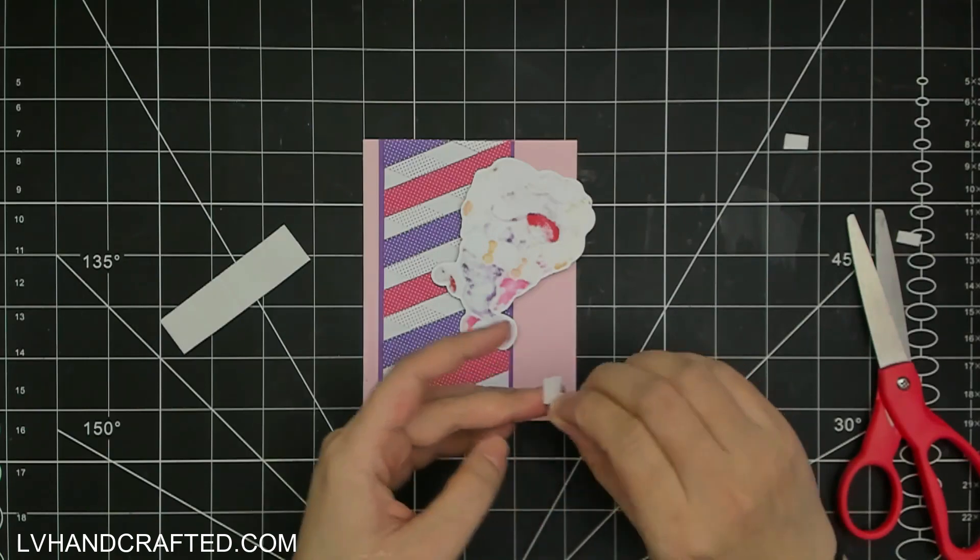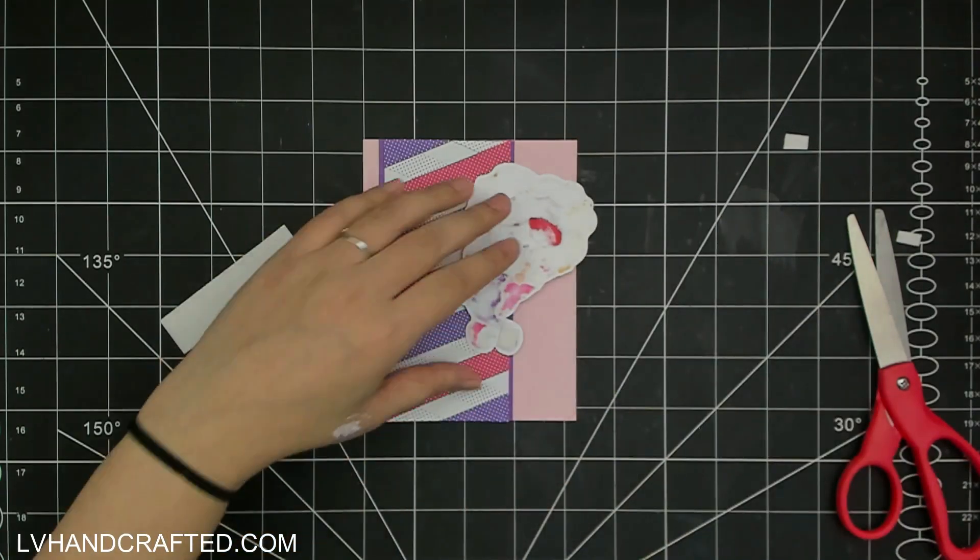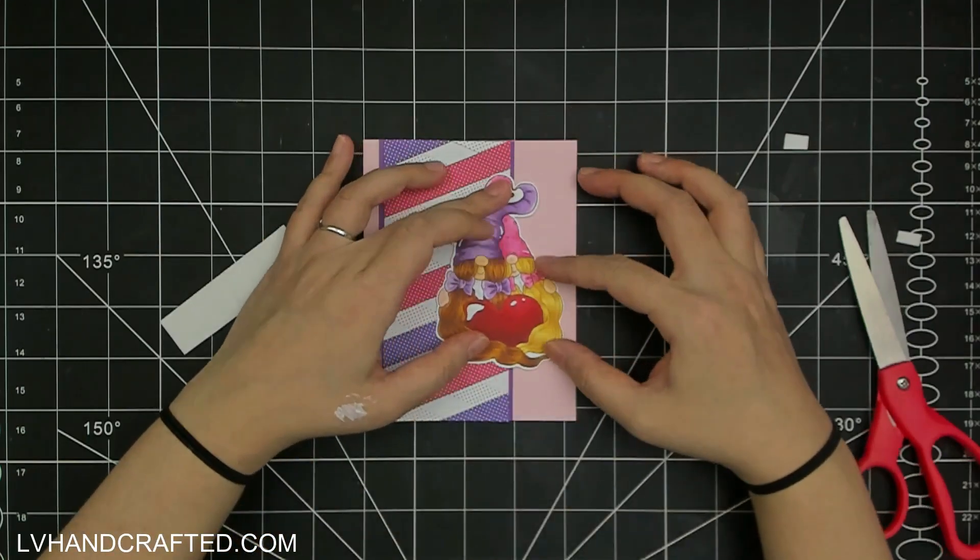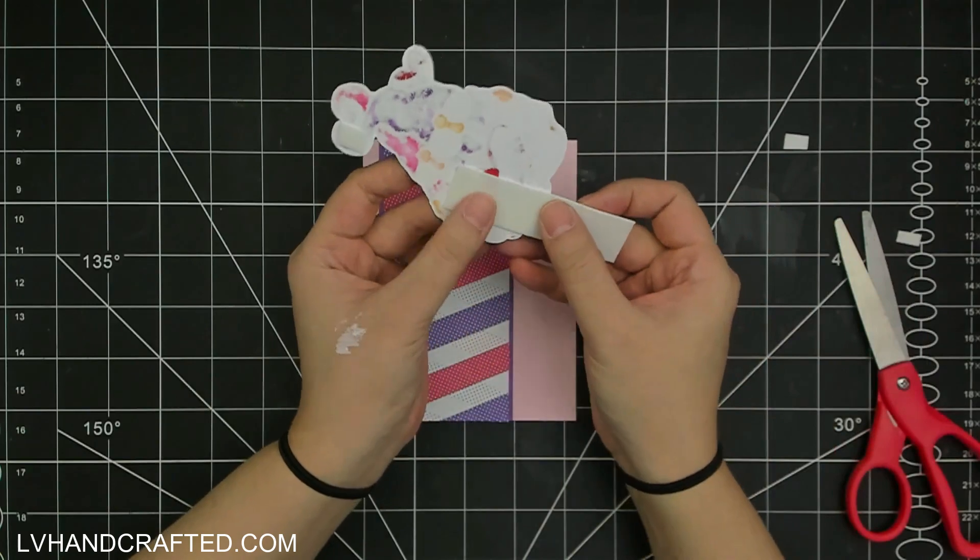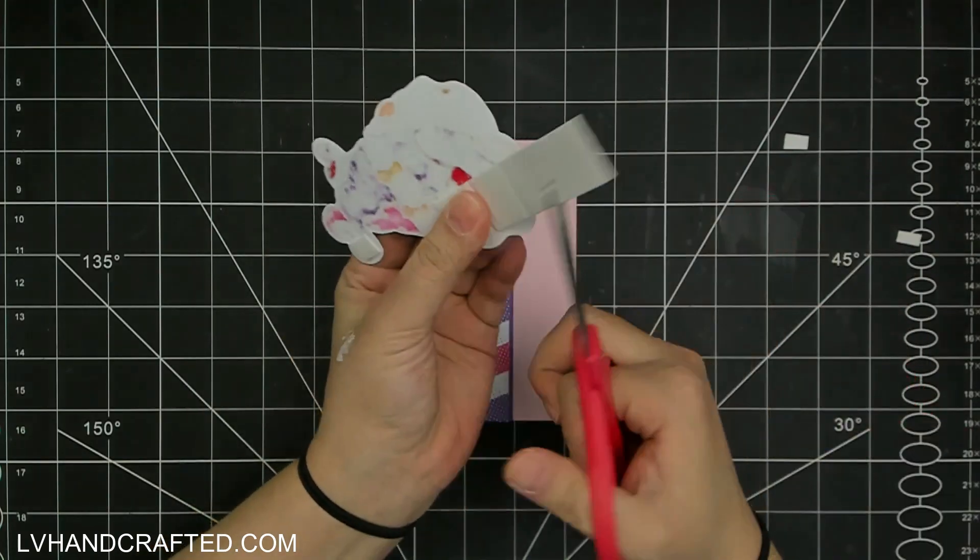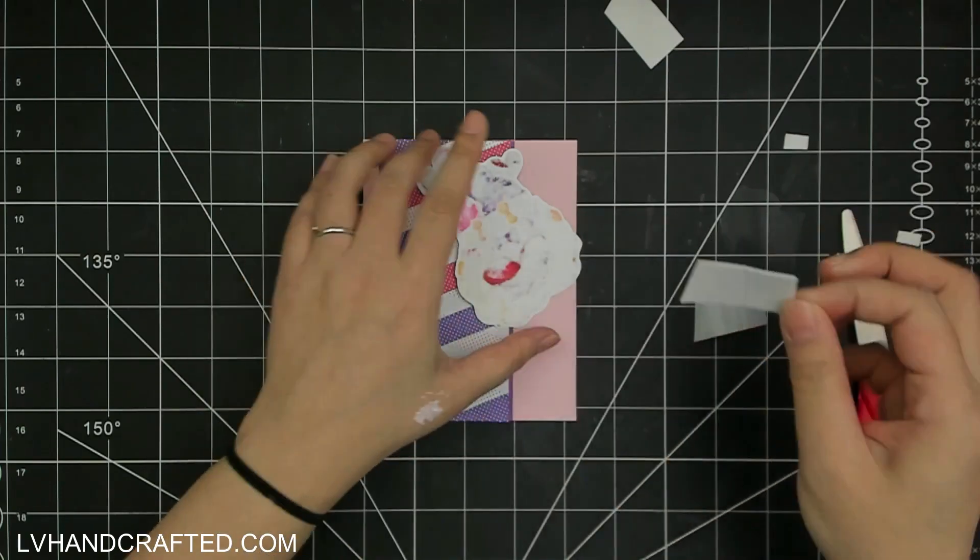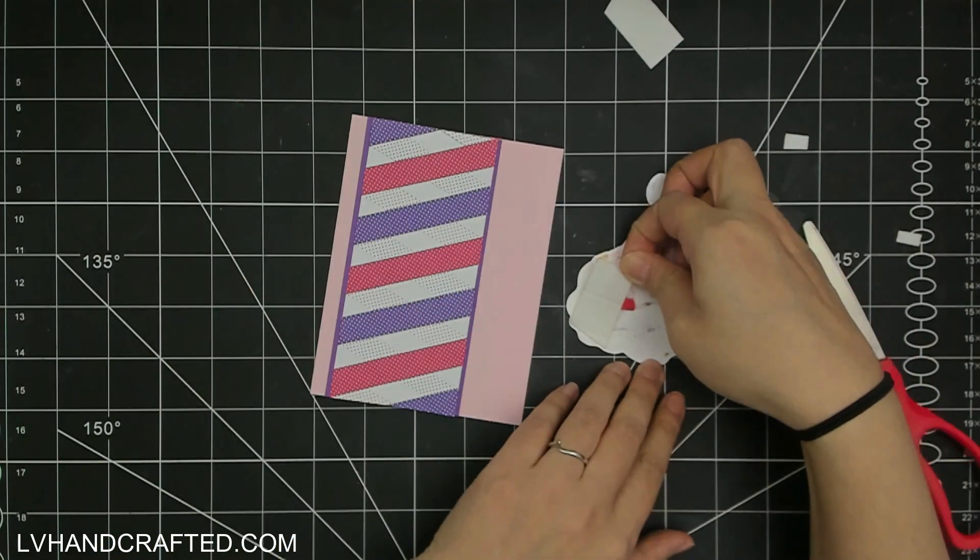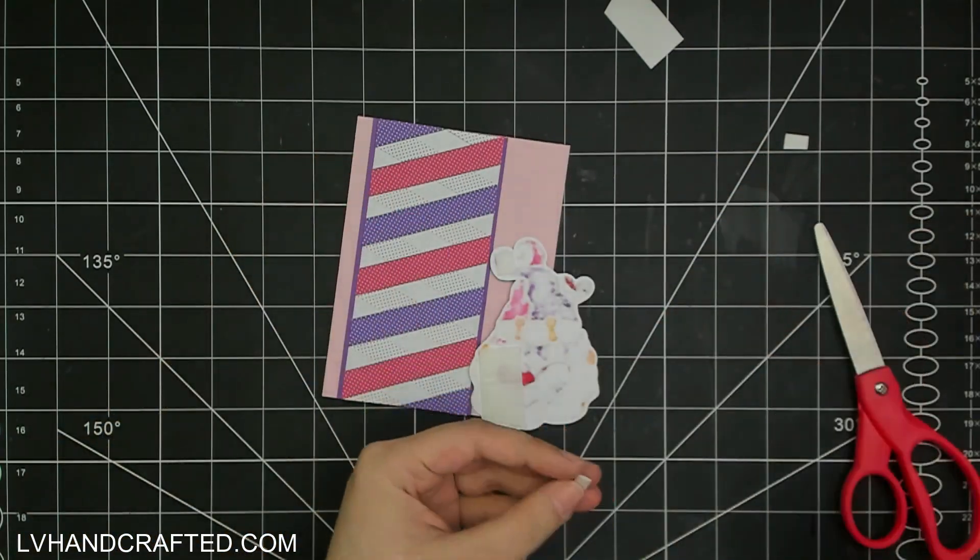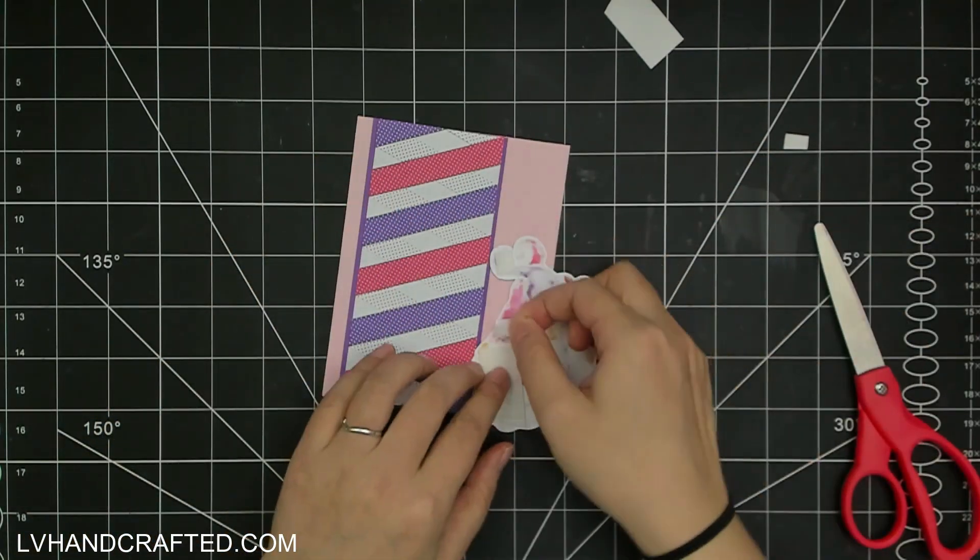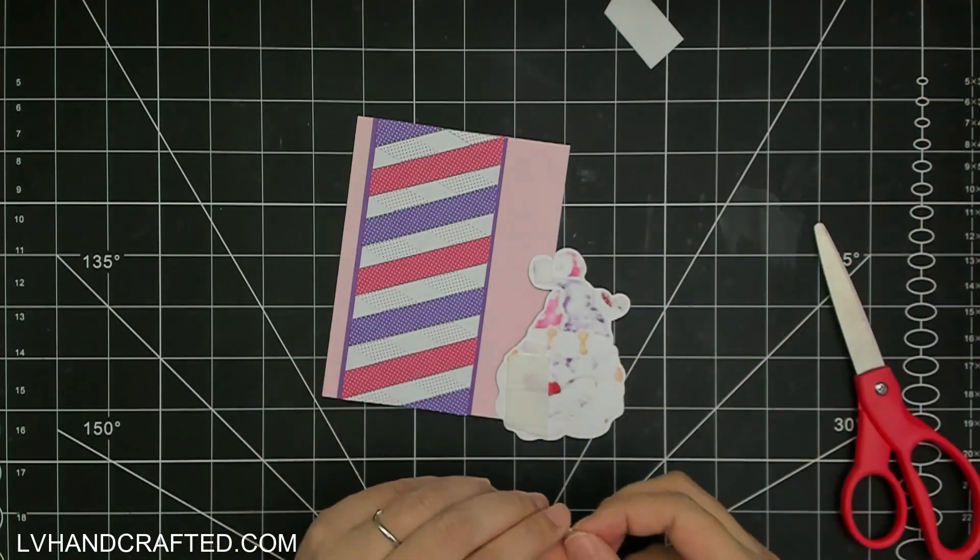I have the Sakura Jelly Roll pens which are fantastic and work really well, and I have the Uniball Signo white gel pen which is fantastic as well. So it's just that little trick. And so if you struggle with white gel pens, that's a little trick from Helen of Crafty Mama Diaries, so give that a shot.